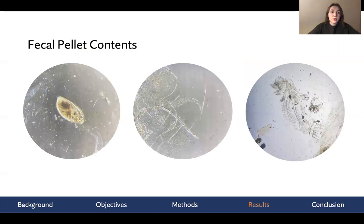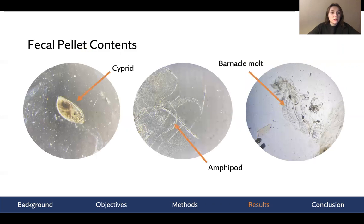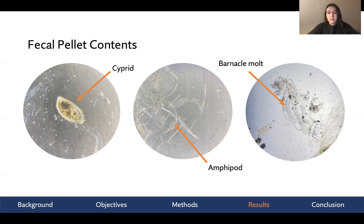We wanted to explore this further by looking at fecal pellets collected from the field. We saw a lot of different things under the microscope, including barnacle cyprids, arthropod cuticle, and barnacle molts. We also saw some surprising things, such as a lot of terrestrial insects including ants, moths, and mosquitoes. This supports our hypothesis overall that Diadumene is a generalist feeder that will try to eat whatever it can.